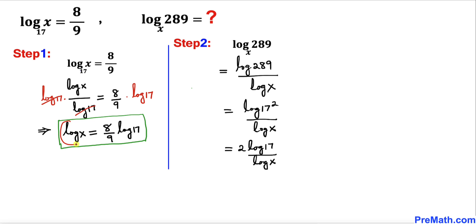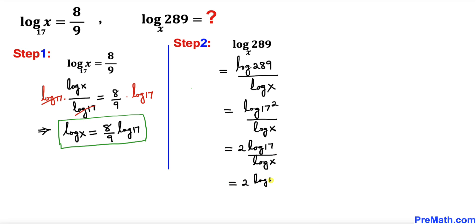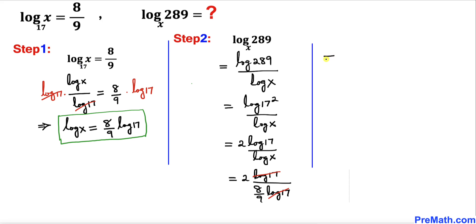We know that log of x equals 8 over 9 times log of 17, so I'm going to substitute that into the denominator. This becomes 2 times log of 17 at the numerator, divided by 8 over 9 times log of 17. The log of 17 terms cancel, leaving us with 2 divided by 8 over 9, which simplifies to 9 divided by 4.